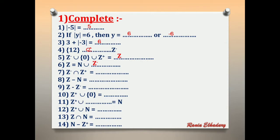Number 7: Z negative intersection Z positive equals what? What is the common element between Z negative and Z positive? Nothing. So the answer is the empty set (phi).